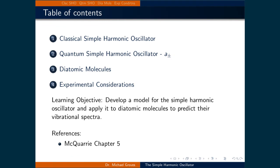This lecture will be broken up into four pieces. We will first briefly examine the classical simple harmonic oscillator before moving into the quantum simple harmonic oscillator. Once we define that system we will apply the results to predict the spectra of diatomic molecules. Finally we will discuss experimental considerations regarding more complex molecules.